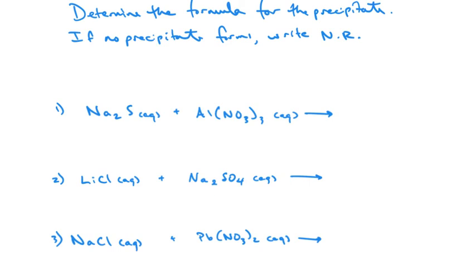Here are three of them for you to try. If there is a precipitate that forms, give me the correct formula for that precipitate. If no precipitate forms, write NR. So first you need to determine is there going to be a precipitate, and then use your ion sheet to make sure the charges and everything balance. If no precipitate forms, if everything's aqueous, write NR. So give these three a try.